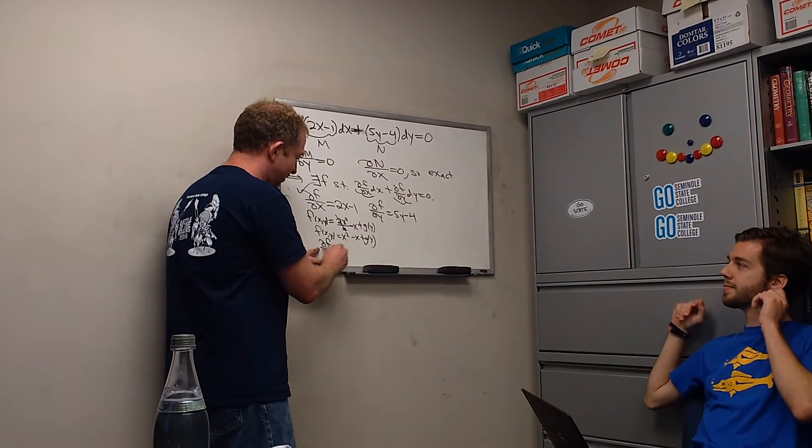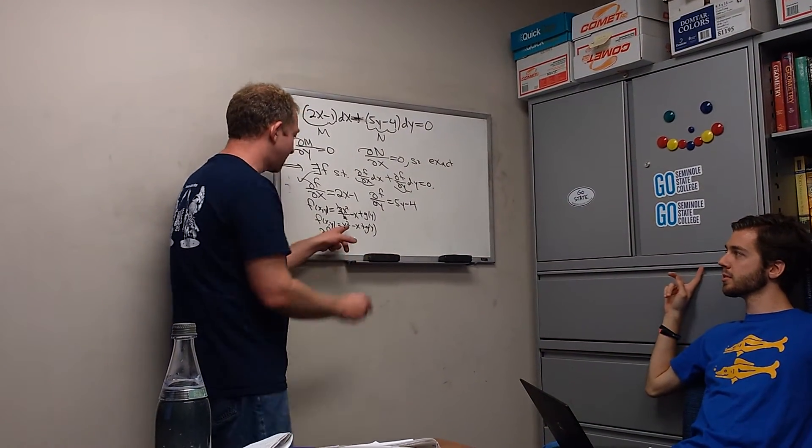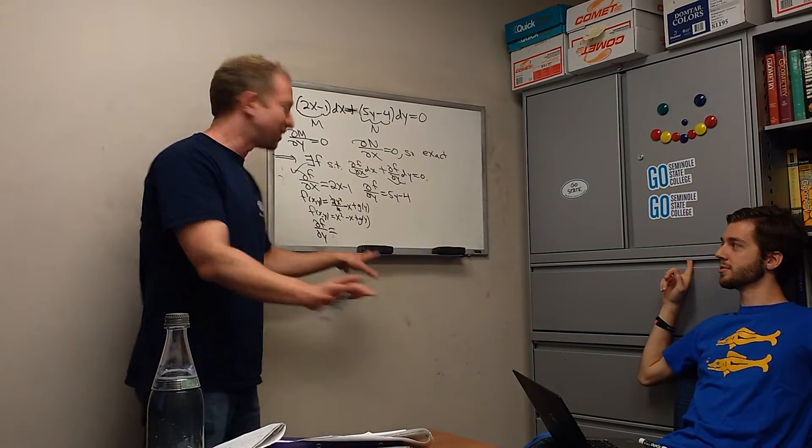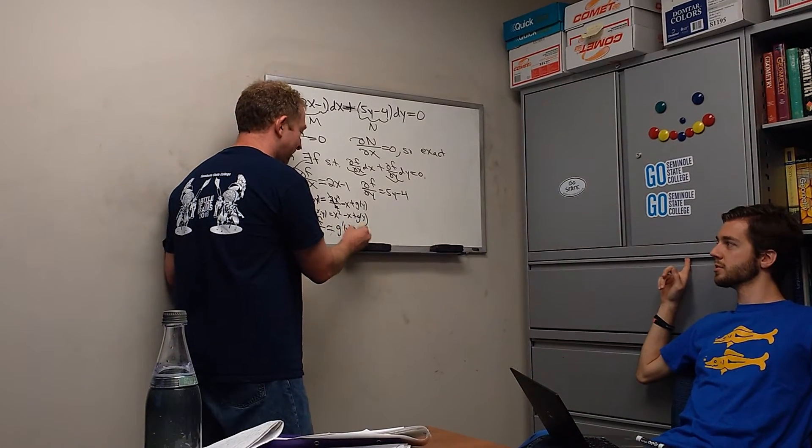So del f del y. Okay. And then what's the derivative of x squared and x with respect to y? Zero. Zero. Yeah, zero. So then here we just get g prime of y.